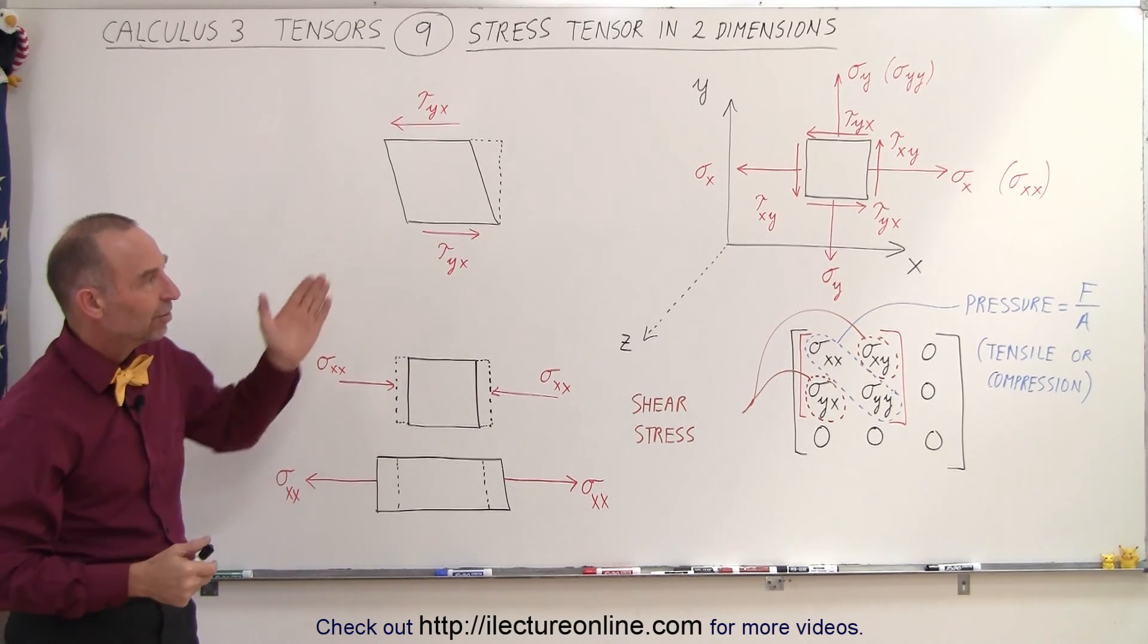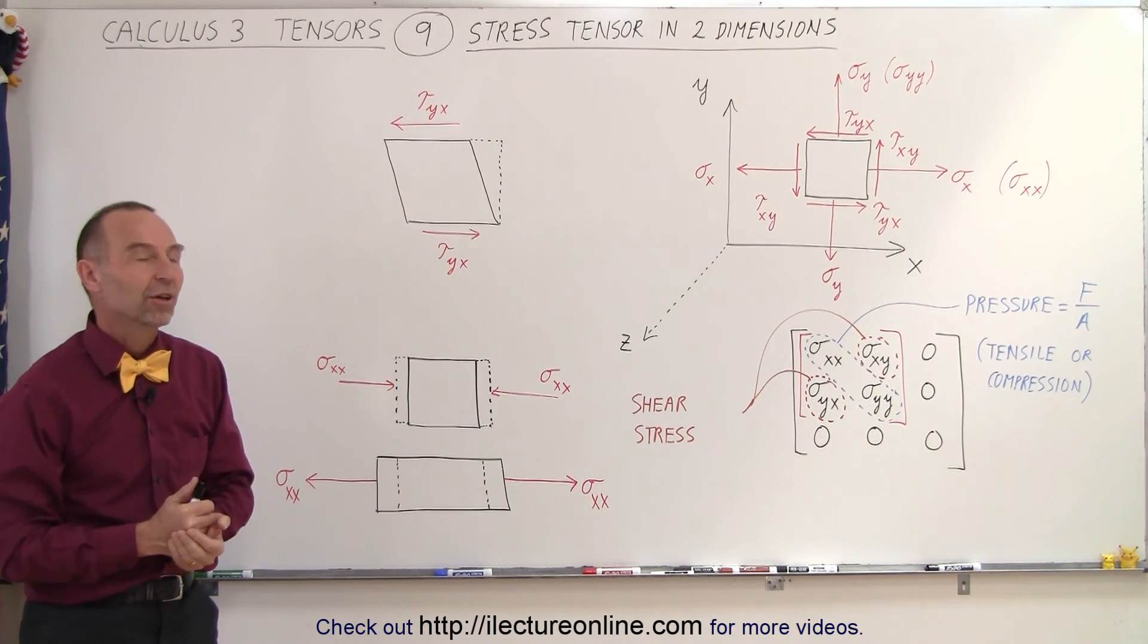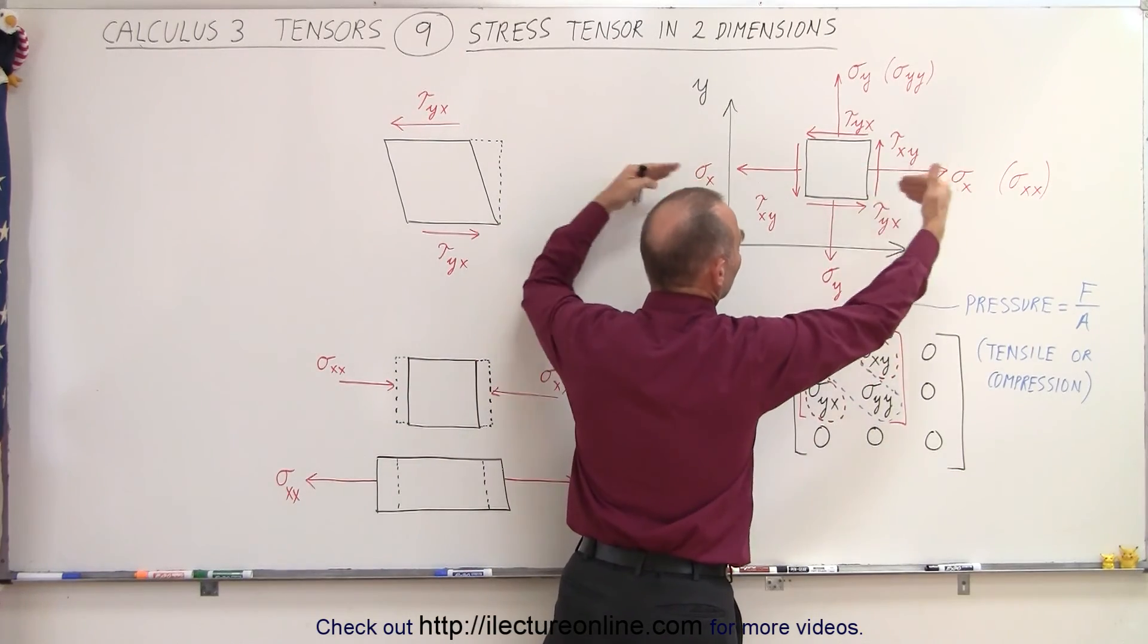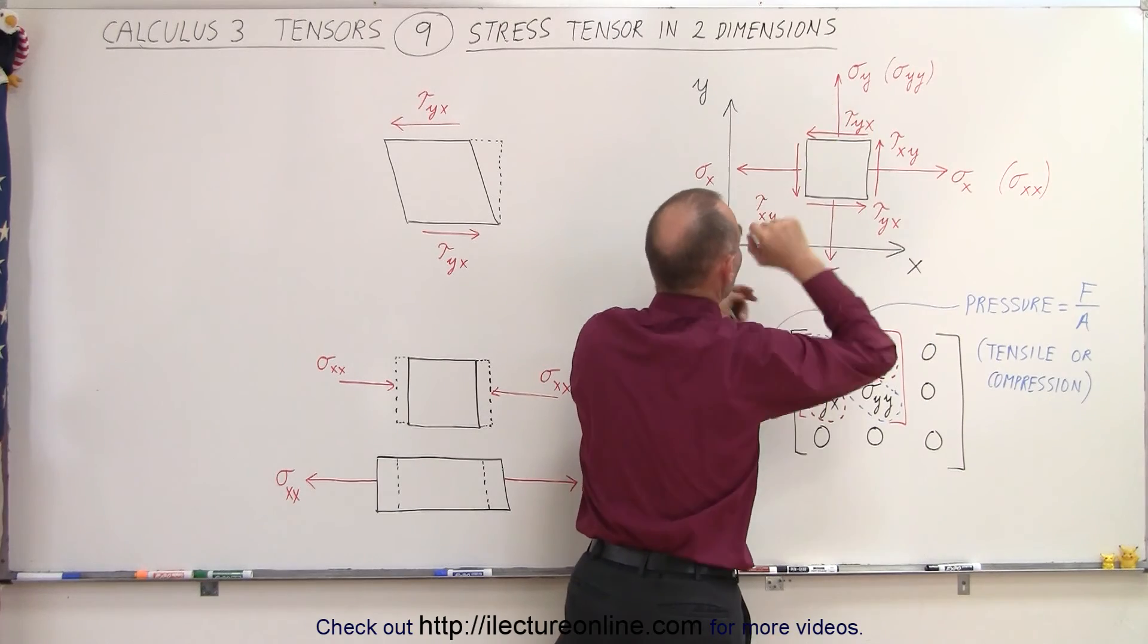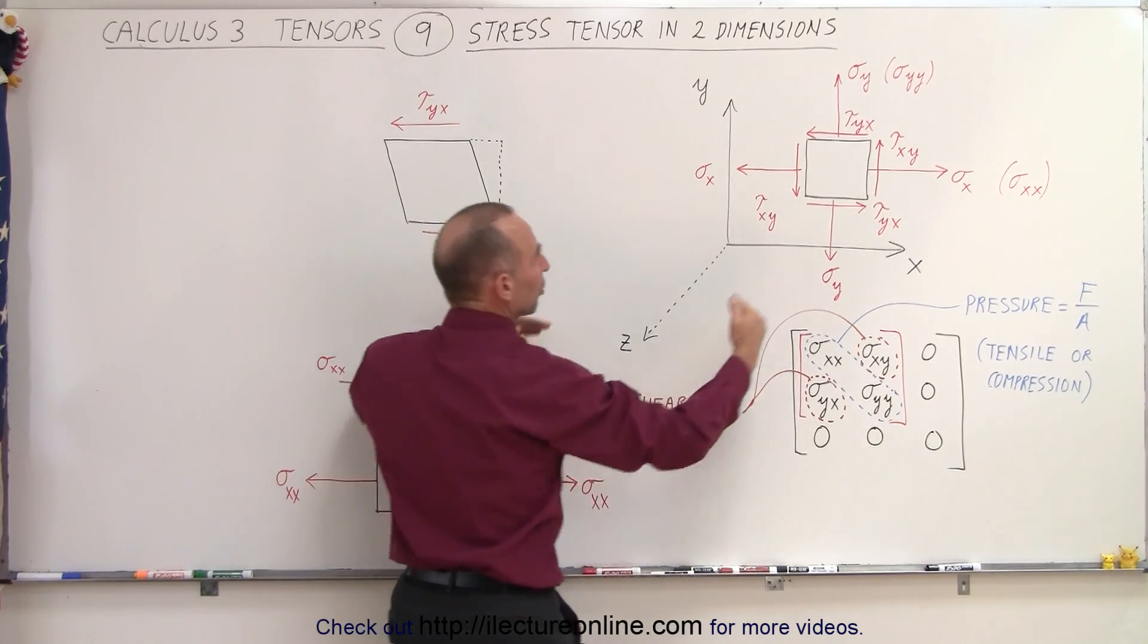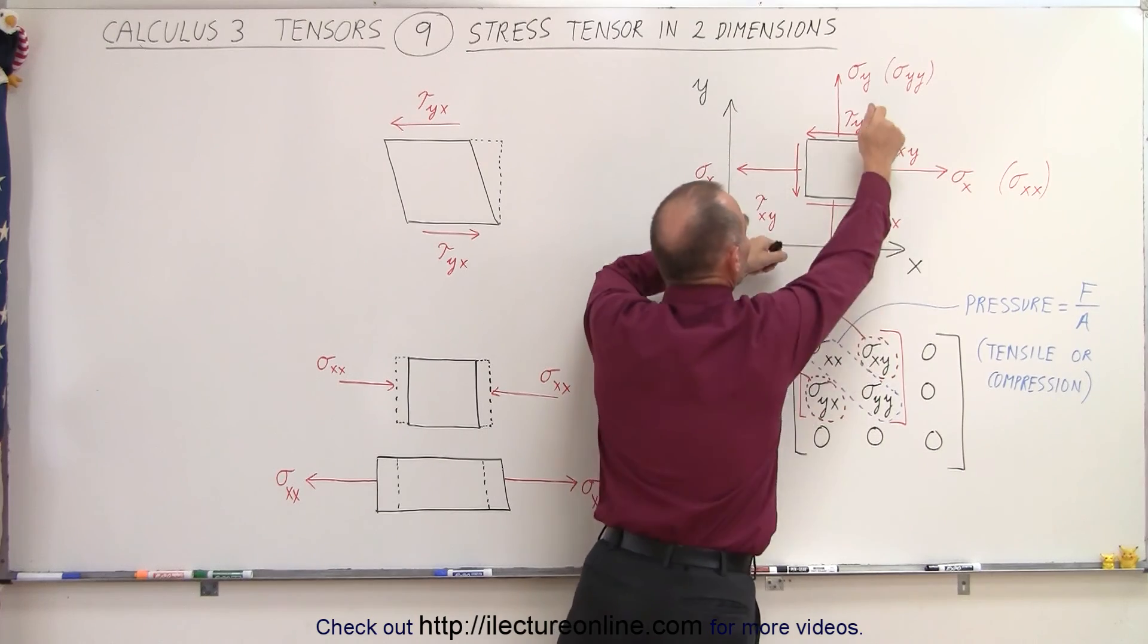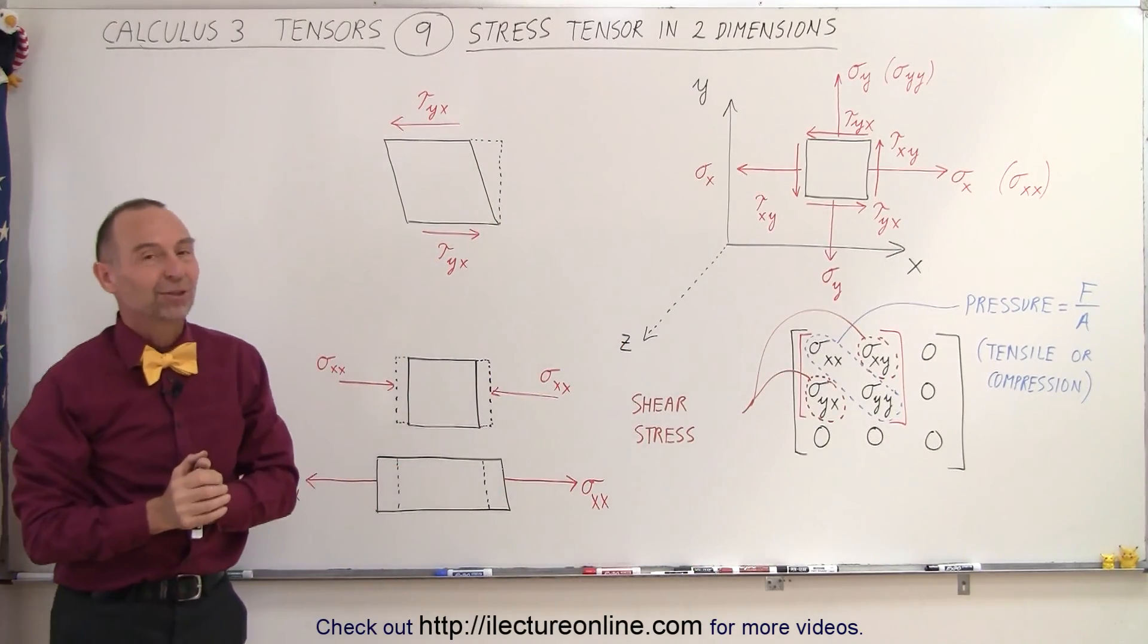We'll show you what that looks like, but at least now we can make the connection more easily when we see it in two dimensions. Again, diagonal components represent the stress caused by pushing or pulling on the two sides from opposite directions. The off-diagonal components, the shear stress components, are the forces that act along the sides in opposite directions causing deformation. That's how it's done.